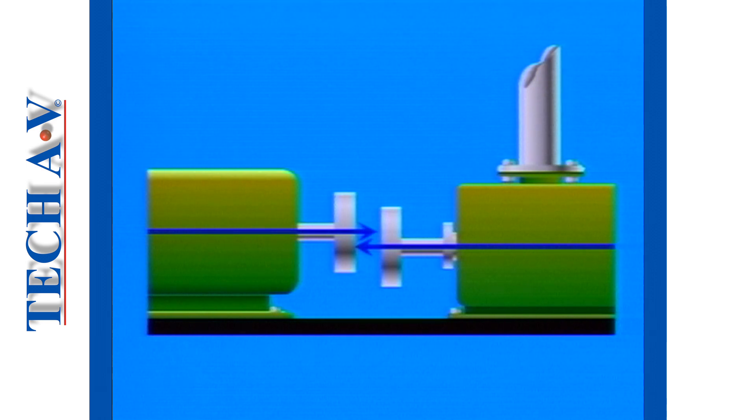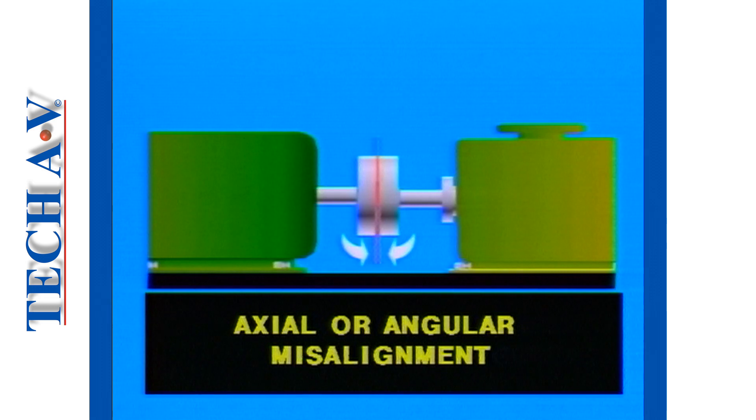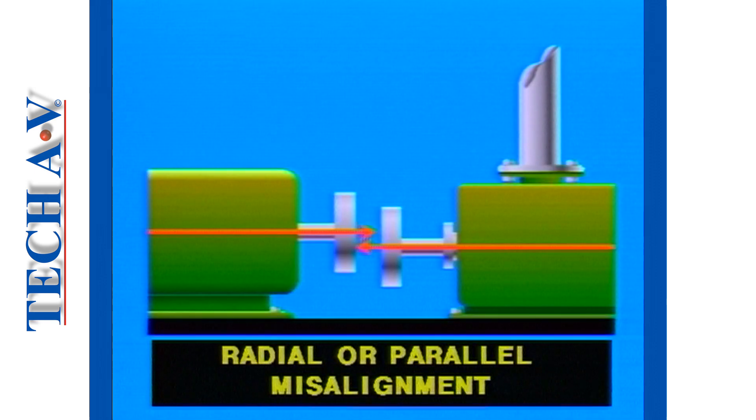Any slight deviation from the perfect situation is considered to be misalignment. There are two basic parameters of misalignment, namely, actual misalignment, sometimes known as angular misalignment, and radial misalignment, sometimes called parallel misalignment.